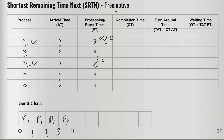At time interval four, we have P2 in the queue and P4 has also arrived. Comparing remaining times: P2 has six and P4 has four. P4 wins, so P4 enters the running state.